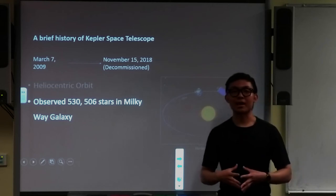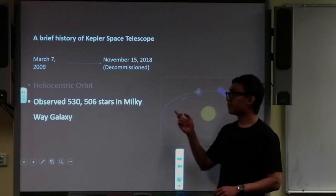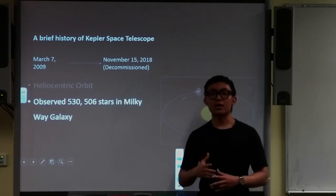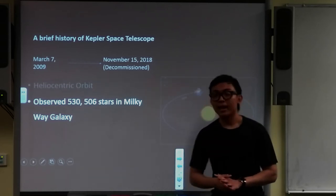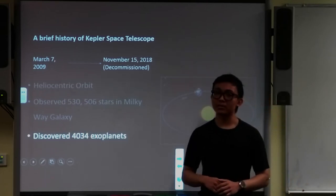During its functioning time, the telescope observed approximately 500,000 stars in the Milky Way galaxy, and in doing so, it discovered about 4,000 exoplanets.